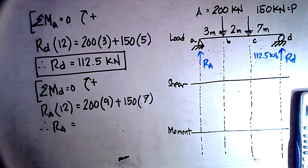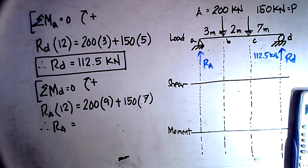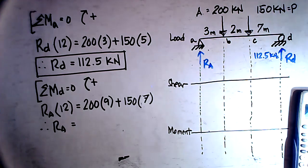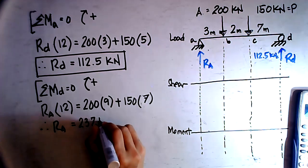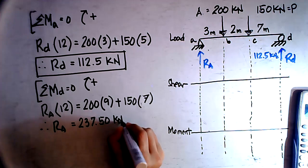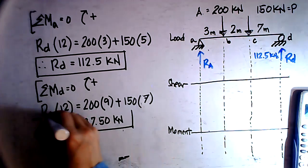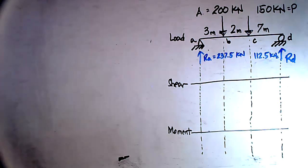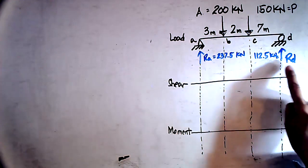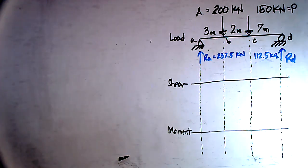So reaction at A equals 200 times 9 plus 150 times 7, divided by 12, which equals 237.5 kilonewtons. Now that we have the reactions, we can draw the shear and moment diagrams.